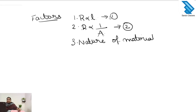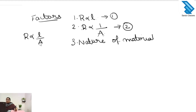Next we combine equations 1 and 2. We get R is proportional to L by A. To remove this proportional sign, we are introducing a constant.